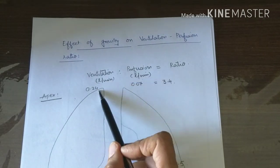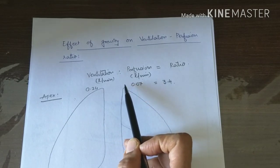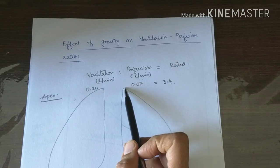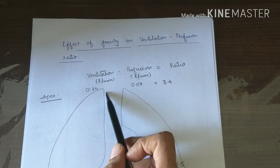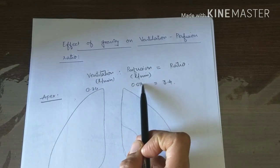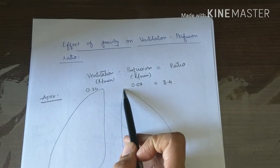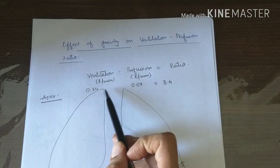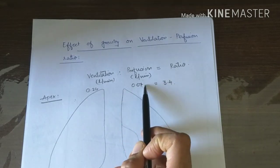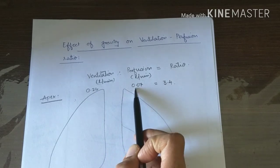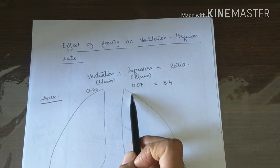This wasted ventilation in apical alveoli, added to the ventilation of the anatomical dead space (from nose to terminal bronchioles), is known as physiological dead space. So physiological dead space is created in apical alveoli.